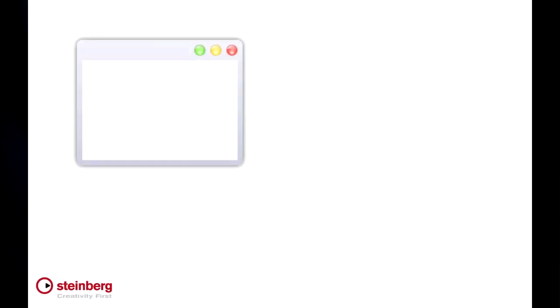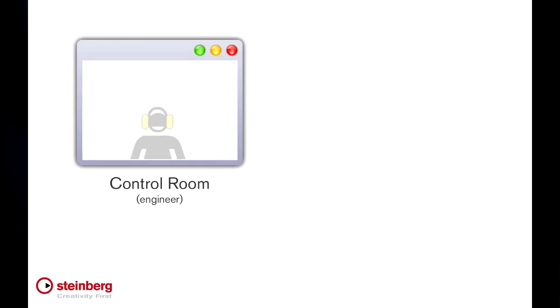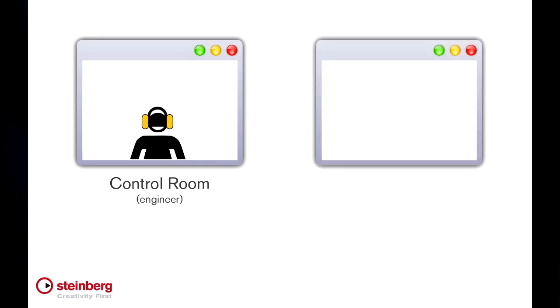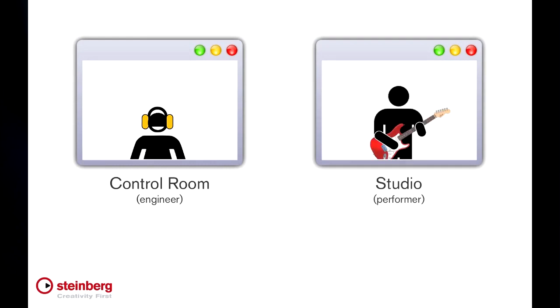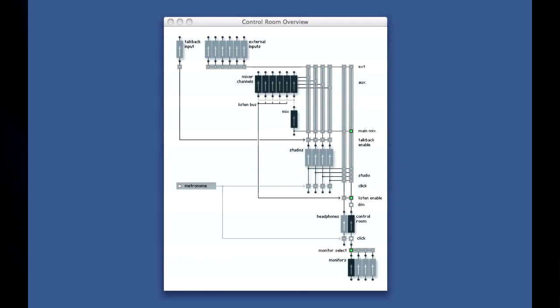Cubase can be configured for use in a traditional multi-room studio. In this type of facility, you typically have performers isolated in their own performance spaces, and the engineer or producer in another location called the control room. Cubase 7 allows you to set up your facility this way using the control room, which allows for a main mix to the engineer and four separate headphone mixes for performers.